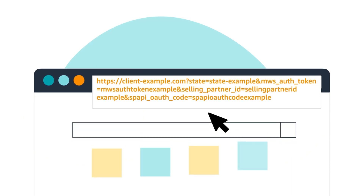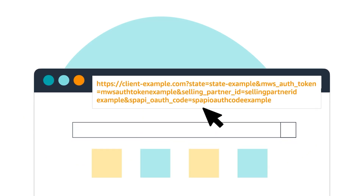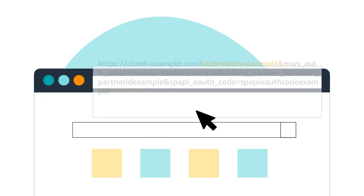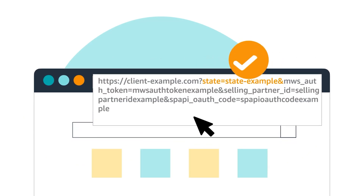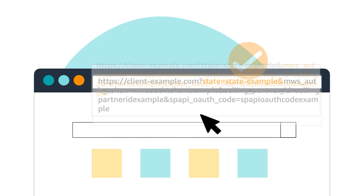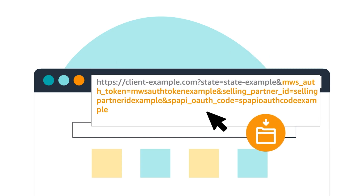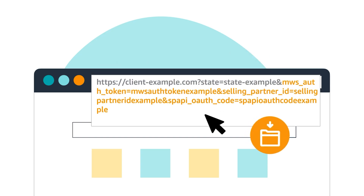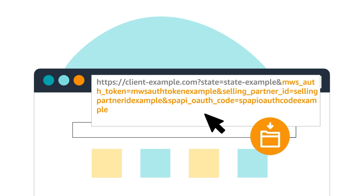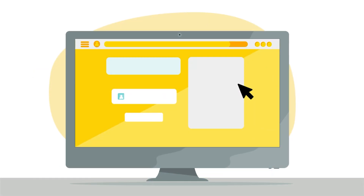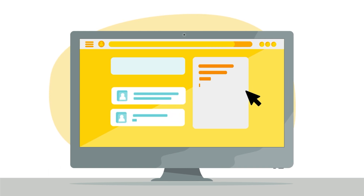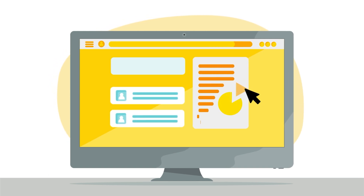Here's an example OAuth URI. Your application will validate the state value and save the Selling Partner ID, MWS Auth Token if passed, and SP API OAuth Code values. Your website's landing page will then appear.